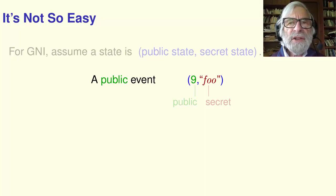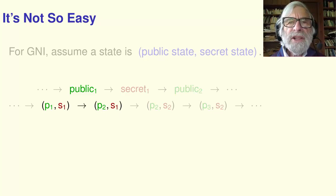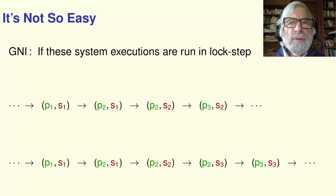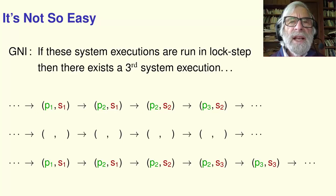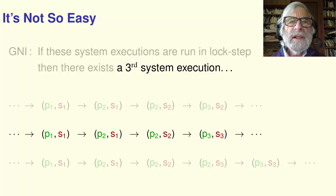So this sequence of events becomes this sequence of states. This public event changes the public state. This secret event changes the secret state. So every event is either a public event or a secret event, and the events are replaced by the state changes. And similarly, this sequence of events becomes this sequence of states. The TLA version of GNI, which I showed you before, asserts that if these two system executions are run in lockstep, then there exists a third system execution whose public states come from the first execution, and whose secret states come from the second execution.